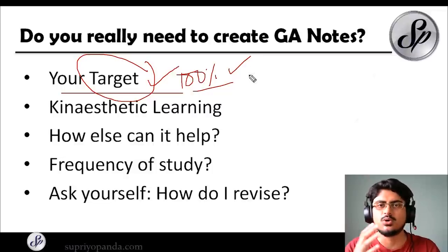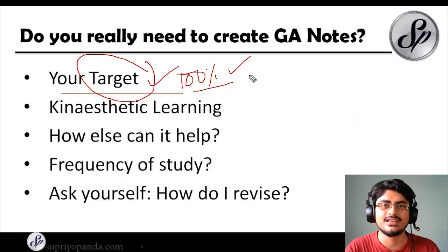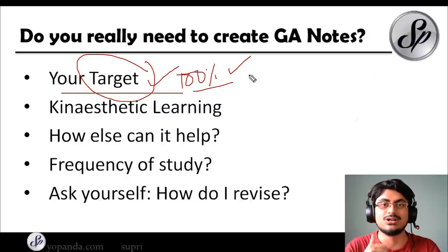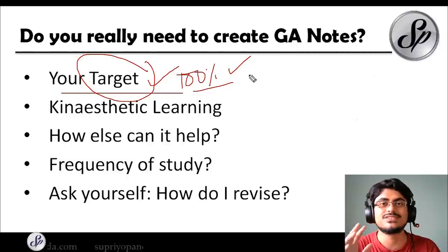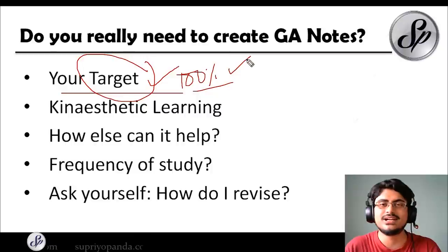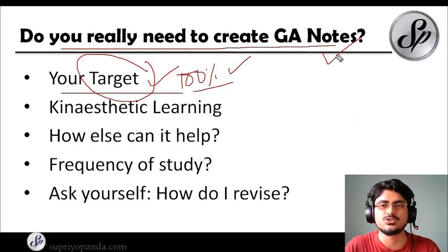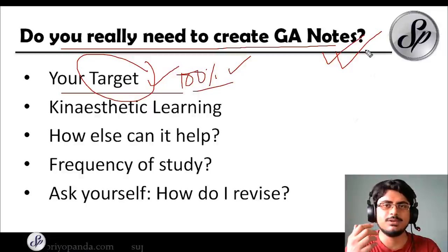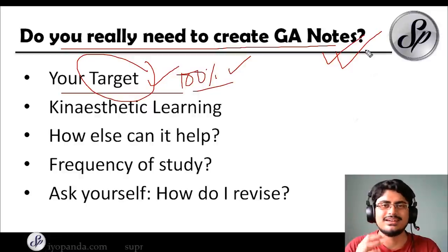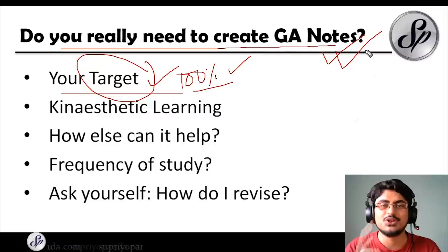All other sections, students are generally good, but in General Awareness not everybody can be good. So if you can be the odd one out, you stand a much higher chance of success. The first important thing to understand is: do you really need to create General Awareness notes? I have seen a lot of people argue it's a waste of time — but you are looking at this in a very unidimensional manner.